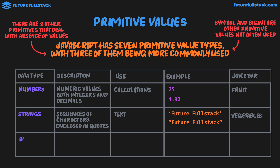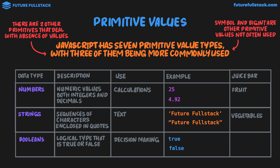The last data type are called booleans. Booleans are a logical type that is either true or false, and they're used for decision making. If something is true, we take one direction in the code; if it's false, we go another direction. There are only two possible boolean values: true or false. This might look like a string, but don't be mistaken — true and false are actual values, just like 25 and 4.92. As we move through the course, you'll see how useful this is for control flow, where we take different routes in our code depending on whether a condition is true or false.